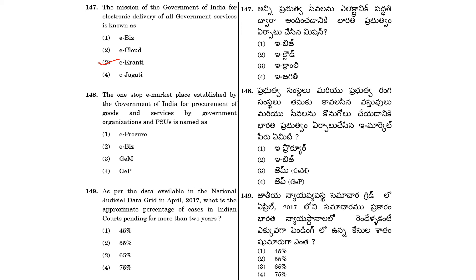Question 148: The one-stop e-marketplace established by the Government of India for procurement of goods and services by government organizations and PSUs is named as? The one-stop e-marketplace is established by the Government of India.